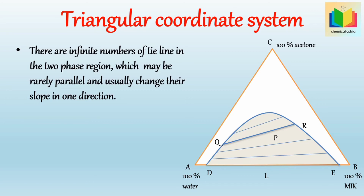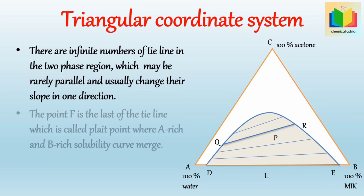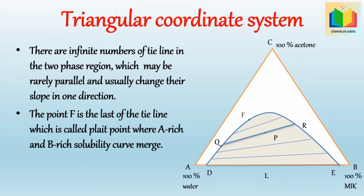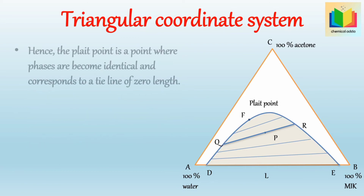The points of a tie line can be found by experiment. Point F is the last of the tie lines, which is called the plait point, where the A-rich and B-rich solubility curves merge. The plait point is a point where the two phases become identical and corresponds to a tie line of zero length.